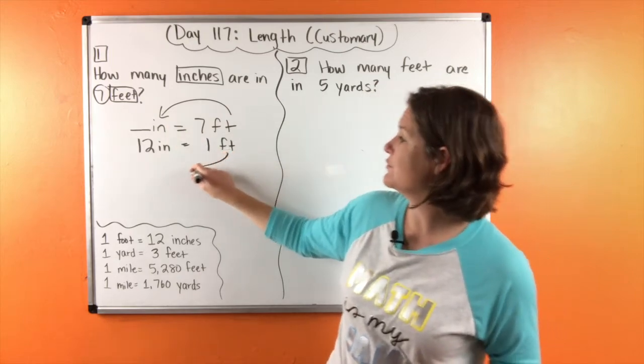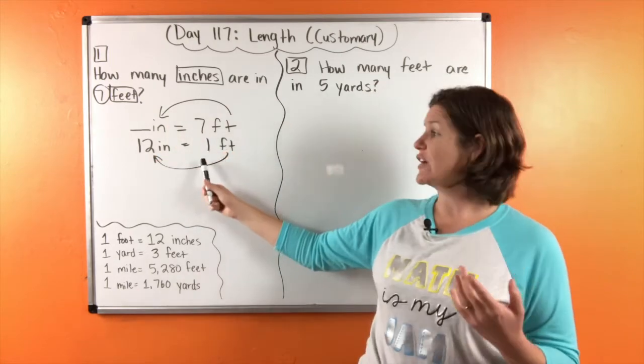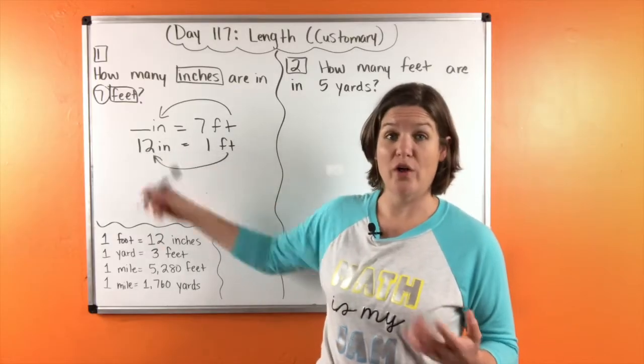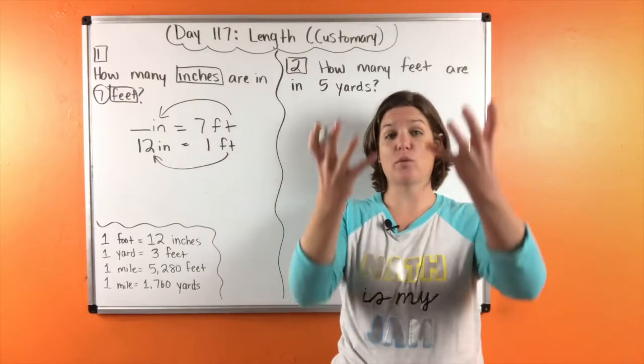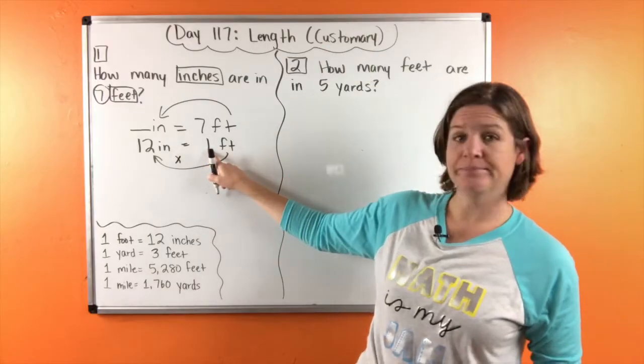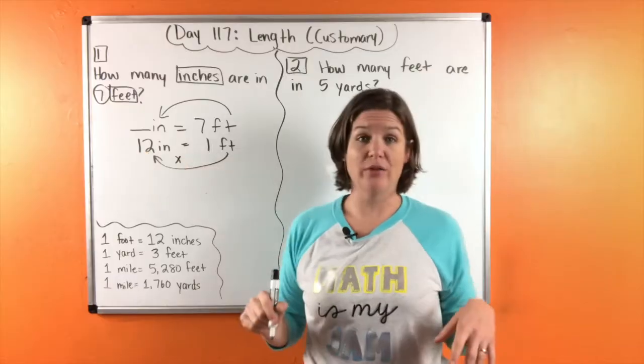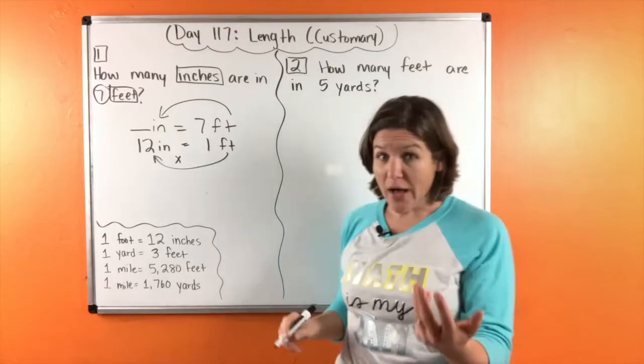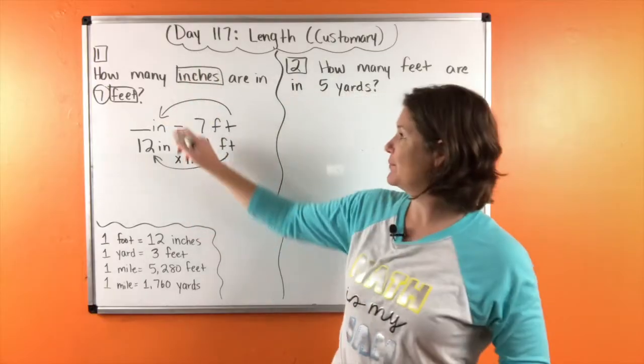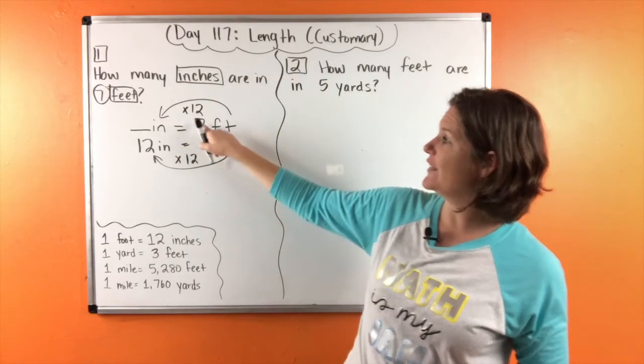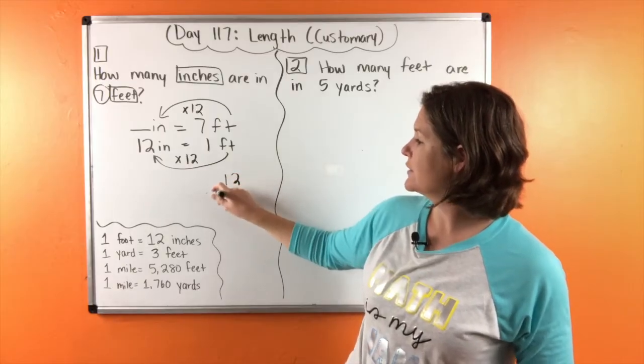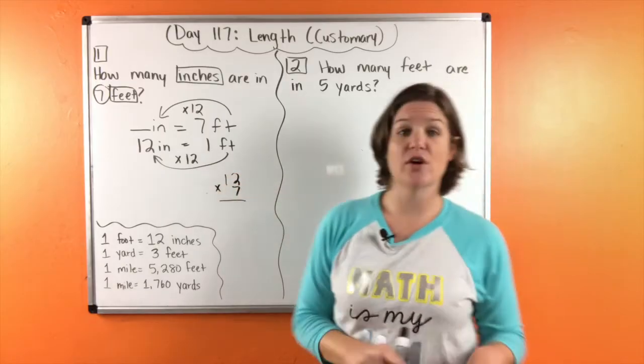So now we're converting from feet to inches. Now let's check out these numbers. We're going from one to 12. So we're increasing from one to 12, which means we need to multiply. So one times what equals 12? One times 12 equals 12. Same on the bottom, same on the top.